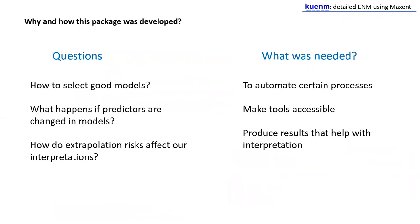We started developing KUNHM in 2018 when a series of questions and needs motivated us to start producing tools to model ecological niches and species potential distributions using Maxent. Although some tools like ENM tools had already existed, we wanted to do certain things differently and make tools that have been developed in the group more accessible to other researchers. Among the questions that motivated us was what will happen if other metrics are used to evaluate models, and the need of automating some processes that weren't automated at that time.